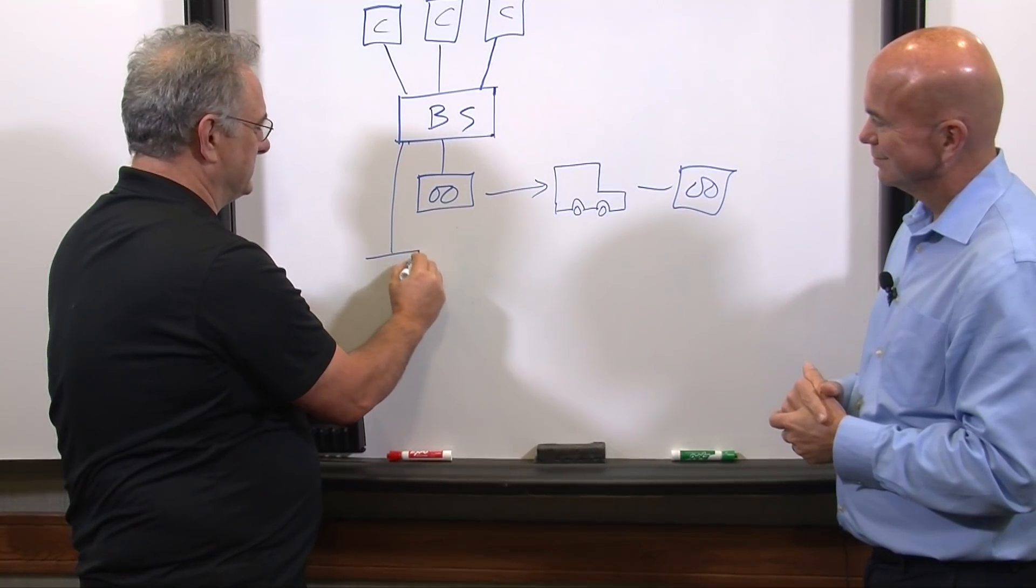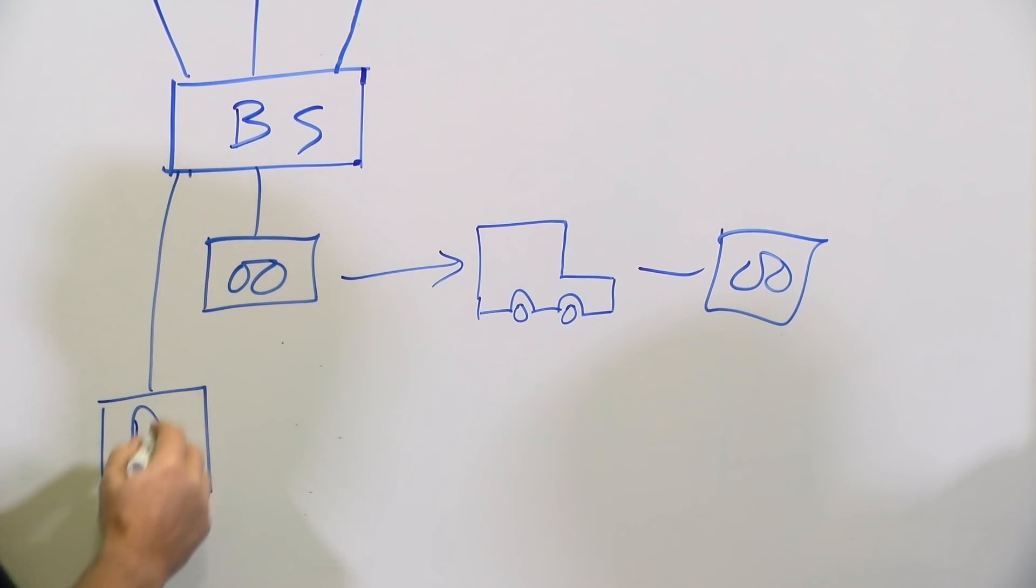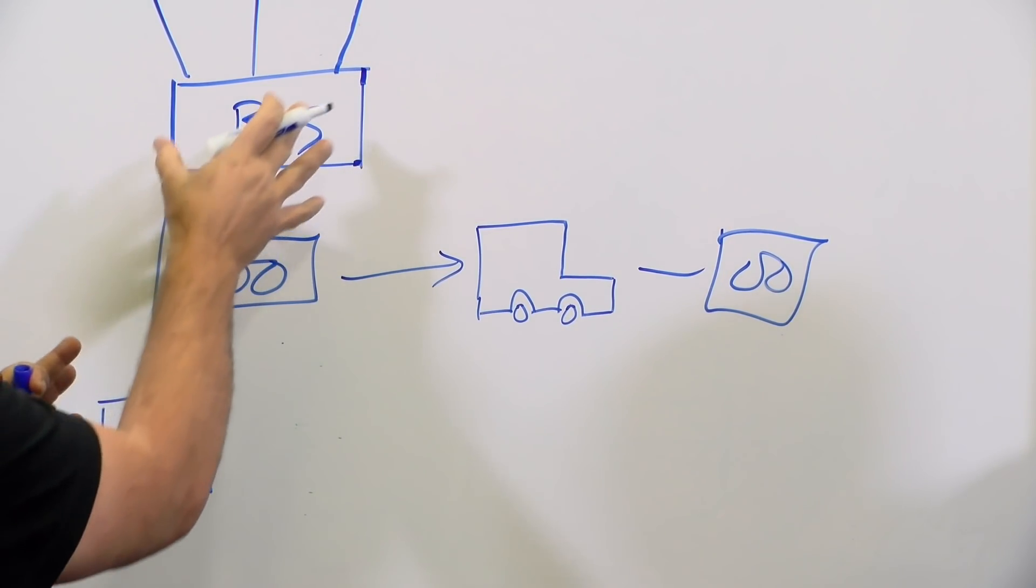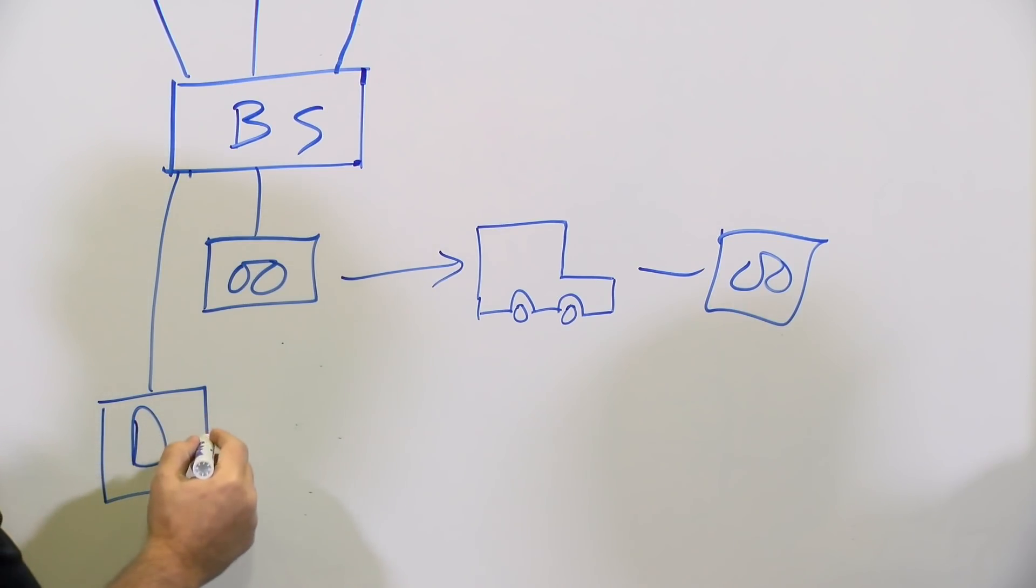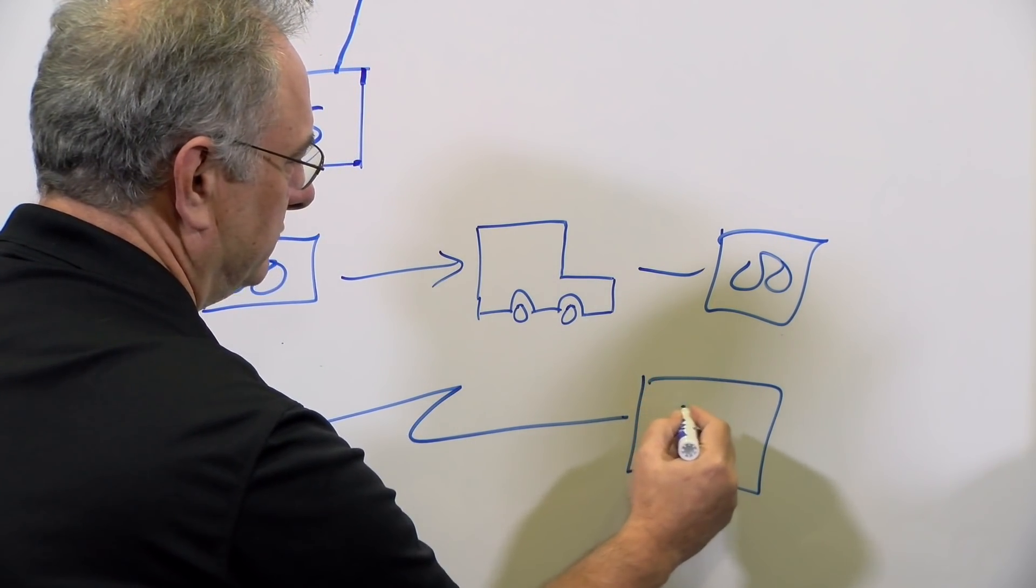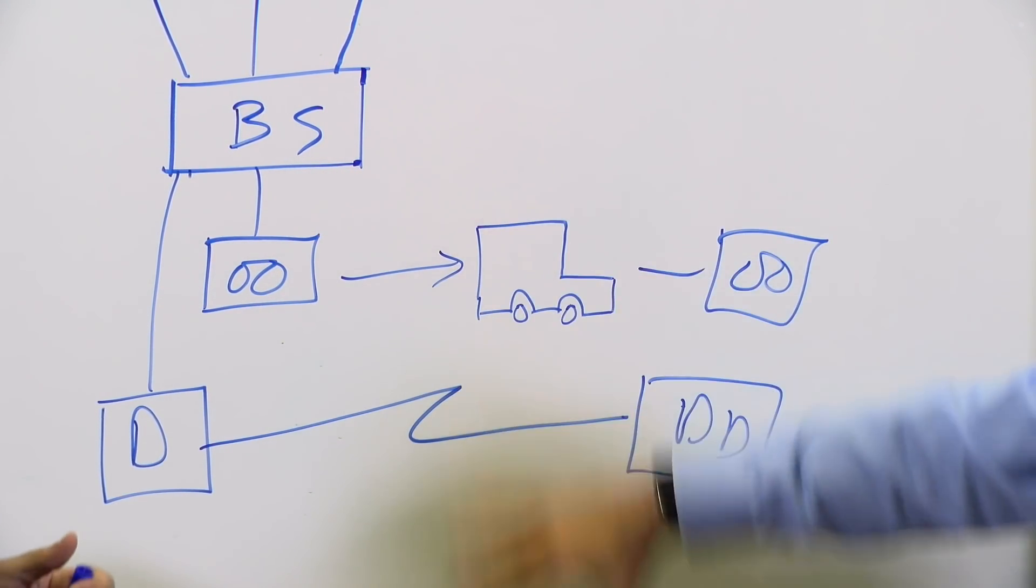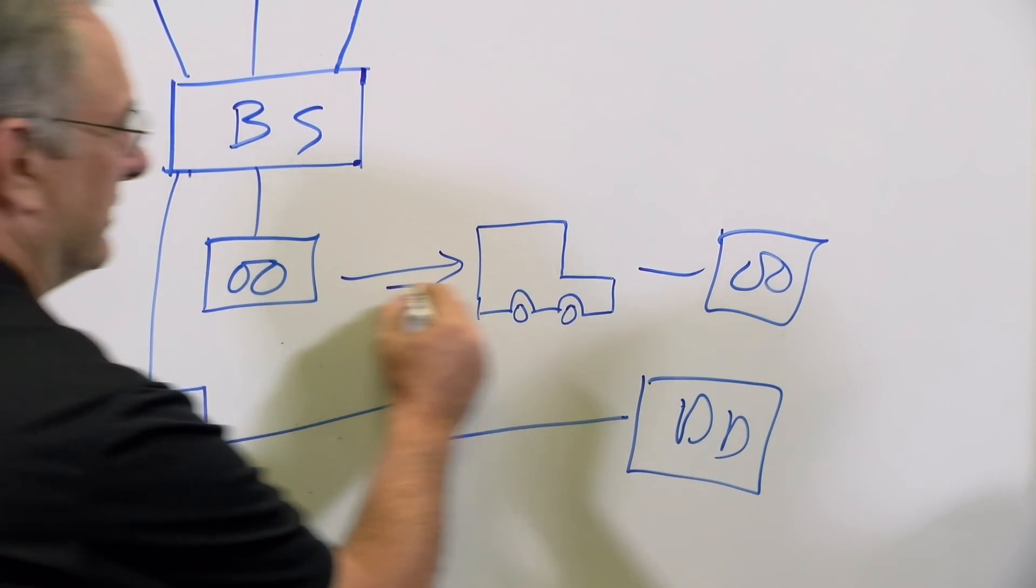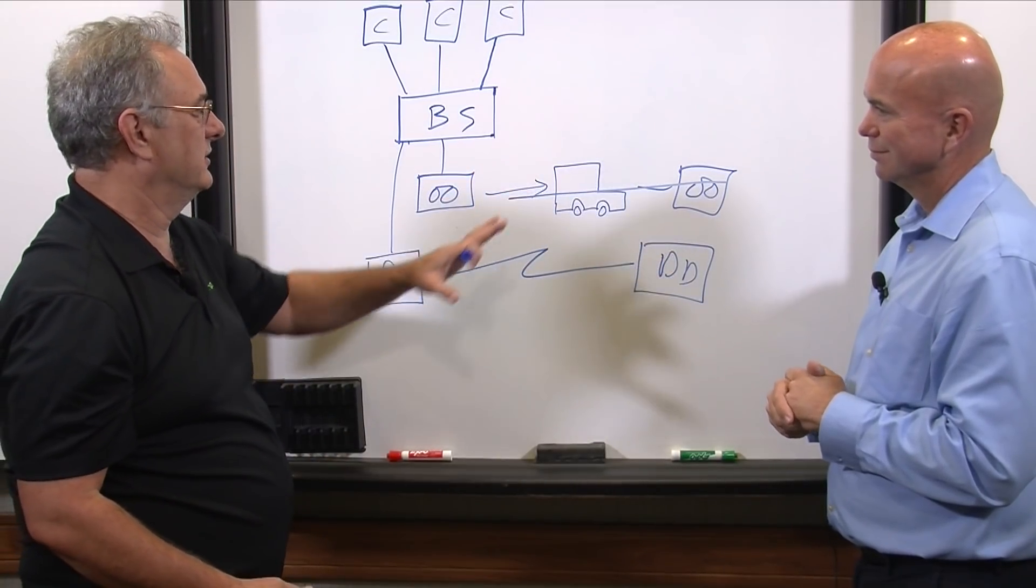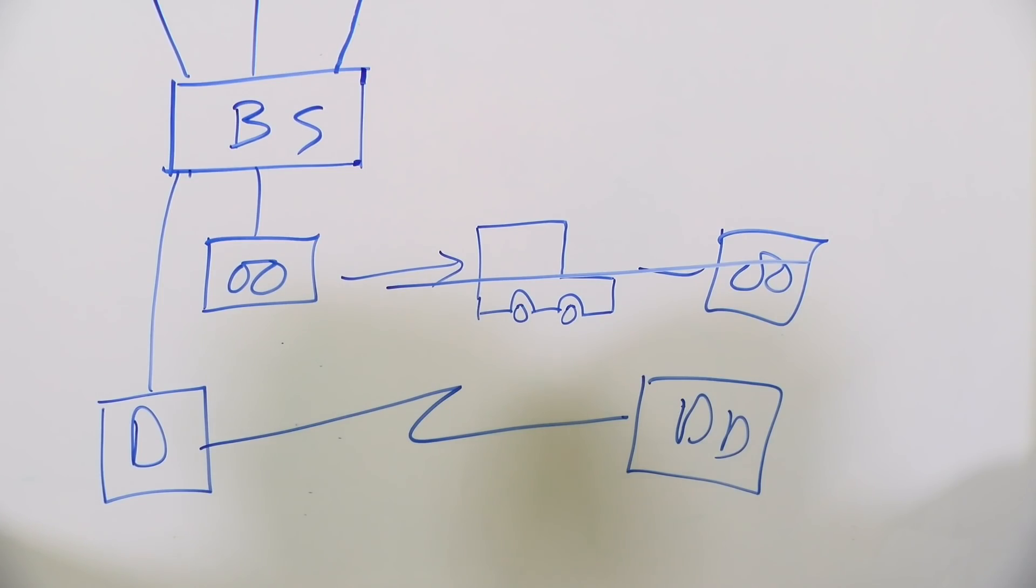And then somebody invented the concept of dedupe. And so now we could back up to disk and we would dedupe either here or here. And then the beautiful thing was that we could replicate that over to here. It gave us some vaulting, eliminated this whole process. We could get rid of that because we all know that's not good. The man with error. The only problem with this was just that it was incredibly expensive.